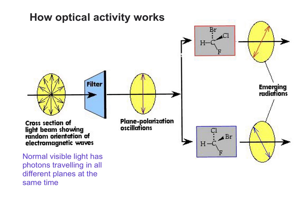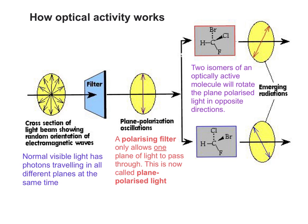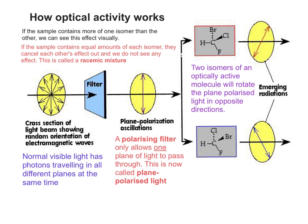So if we start at the left-hand side of the diagram, normal visible light has photons travelling in all different planes at the same time. If that light passes through a polarising filter, only one plane of light can pass through. This is now called plane polarised light. If we pass this plane polarised light through a sample of an optically active compound, the two isomers of the optically active molecule will rotate the plane polarised light in opposite directions.